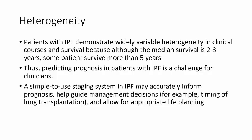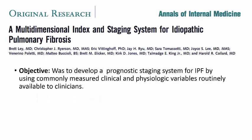This led to the idea that a staging system for IPF may accurately inform prognosis, help guide clinical decision-making, and allow for appropriate life planning. That is where this study came from: the multidimensional index staging system for idiopathic pulmonary fibrosis. The objective was to develop a prognostic staging system using common clinical and physiological variables available at the time of initial consultation.